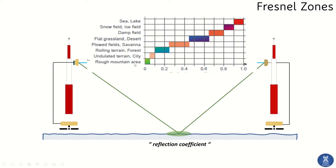For rough terrain or mountain areas, the reflection coefficient is almost zero, meaning all energy safely reaches the receiving antenna. However, for water bodies such as a sea or lake, almost all energy is reflected and gets wasted.